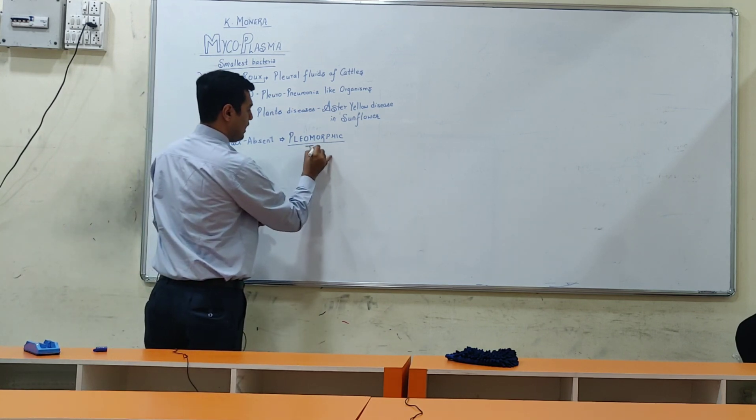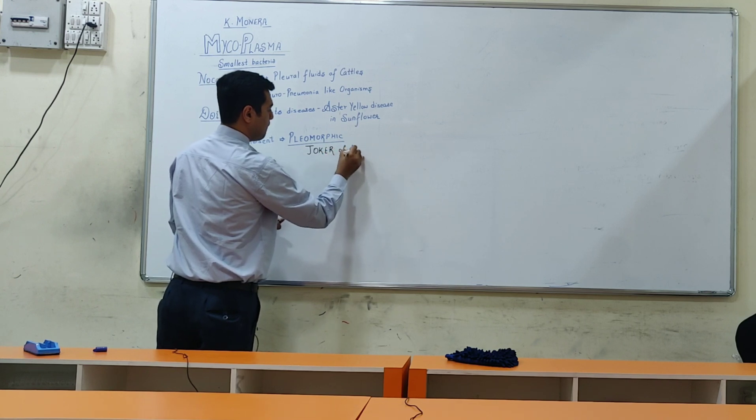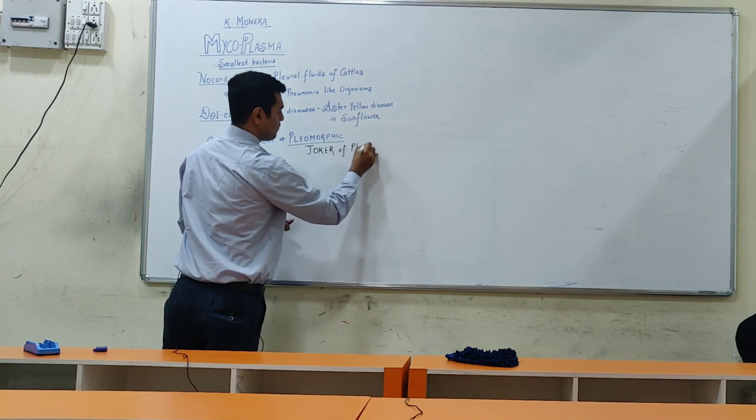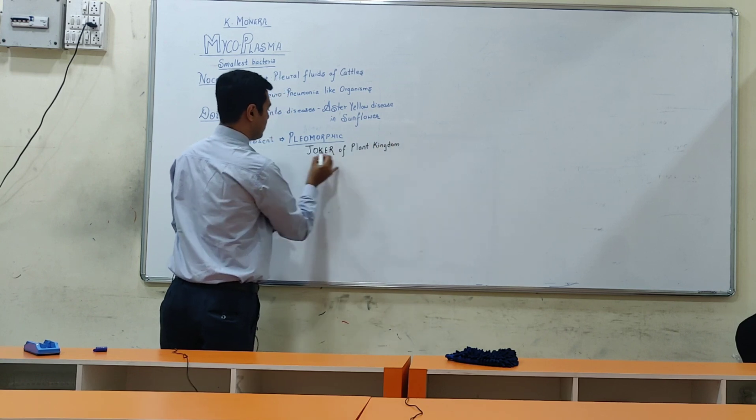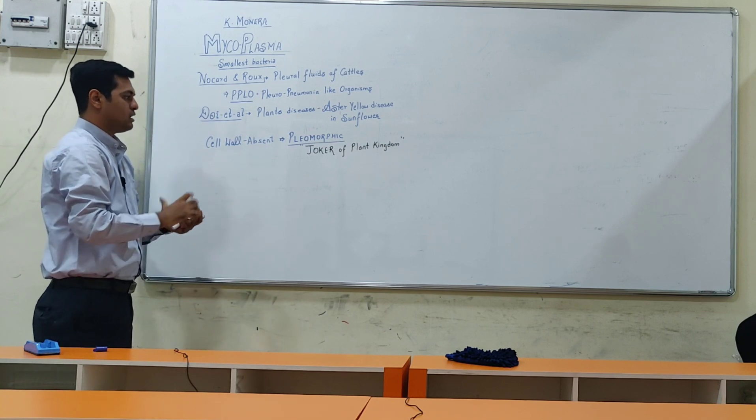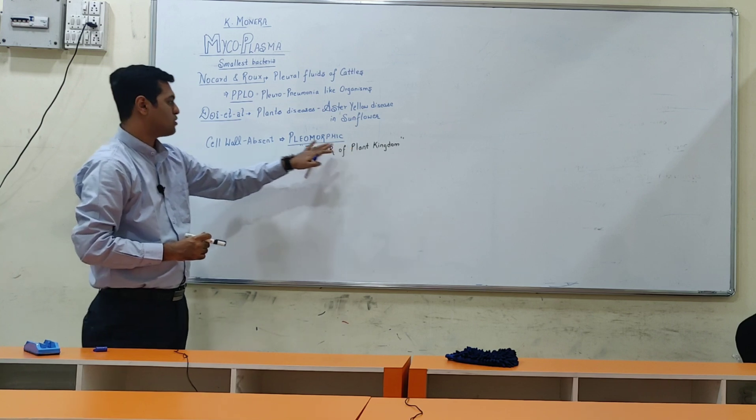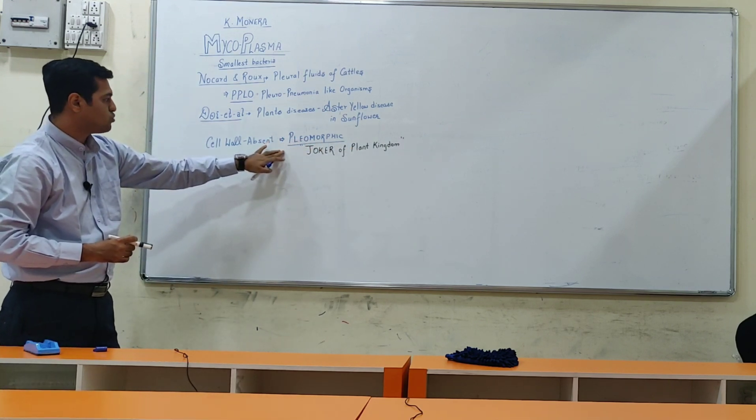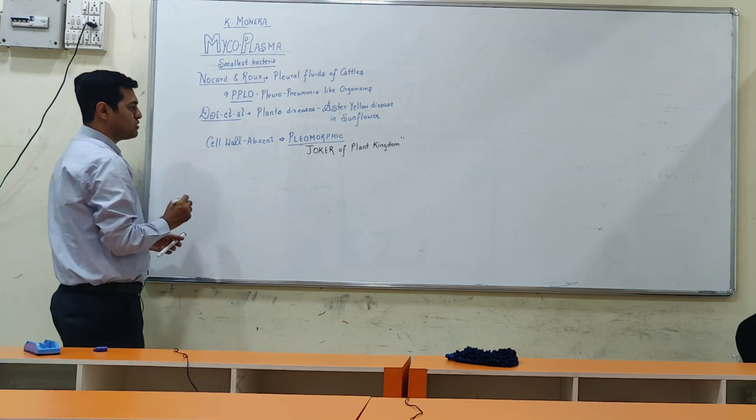It is called the joker of plant kingdom. Initially, scientists placed it in the plant kingdom, but we know it has prokaryotic characteristics. This is considered as joker of plant kingdom because of its pleomorphic nature - cell wall is absent and it can change its shape.